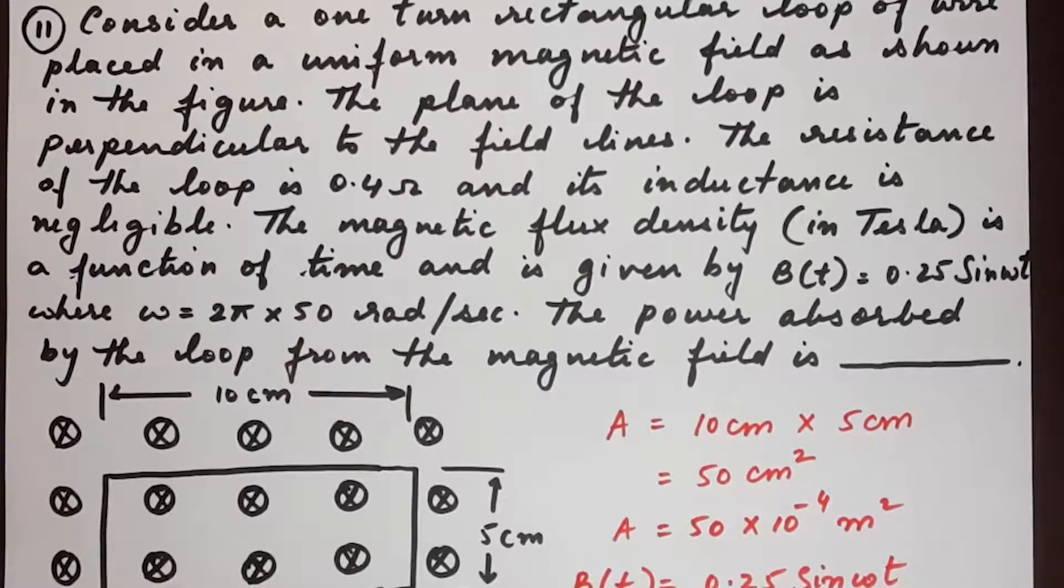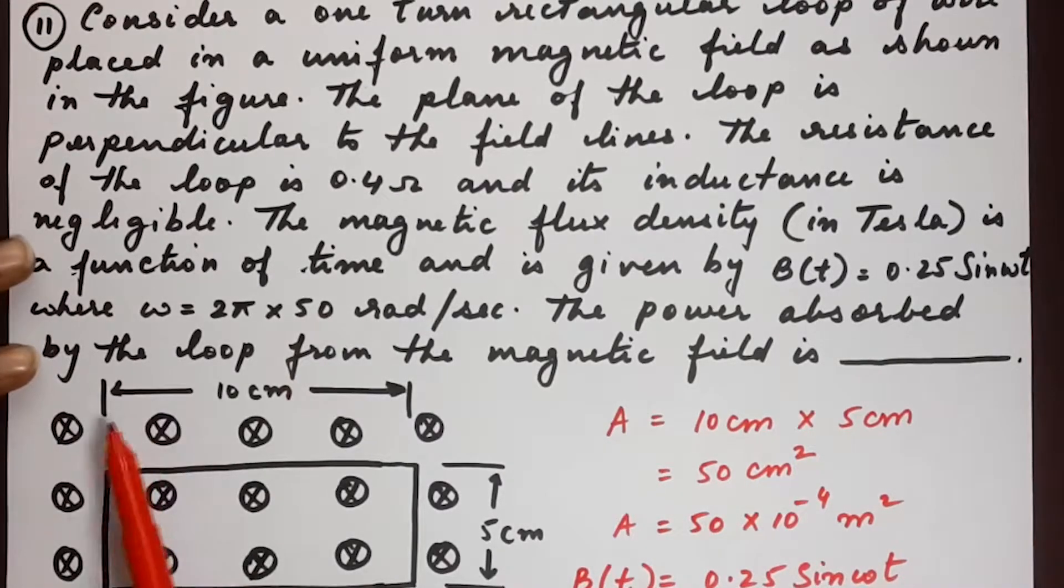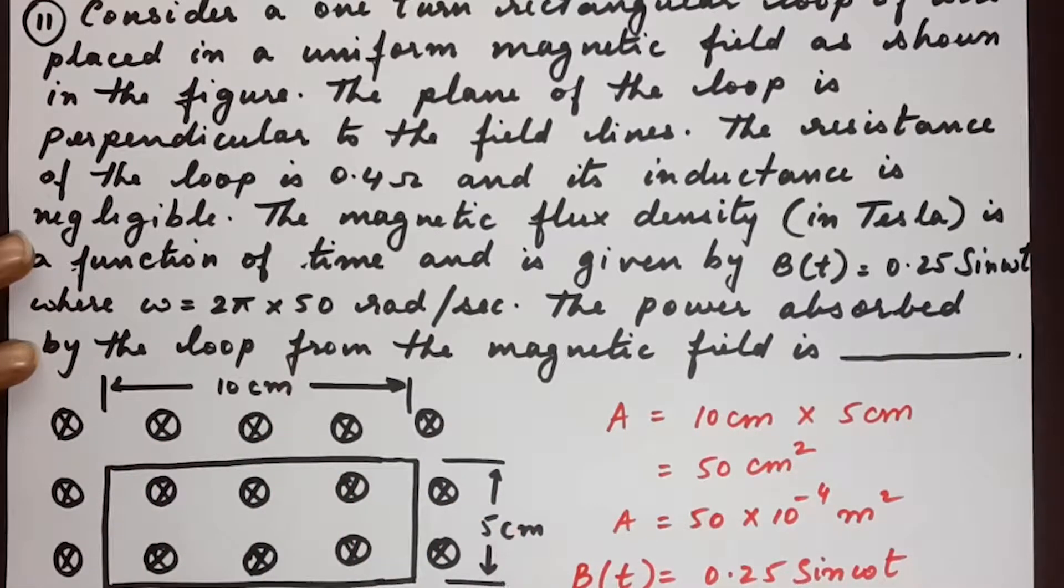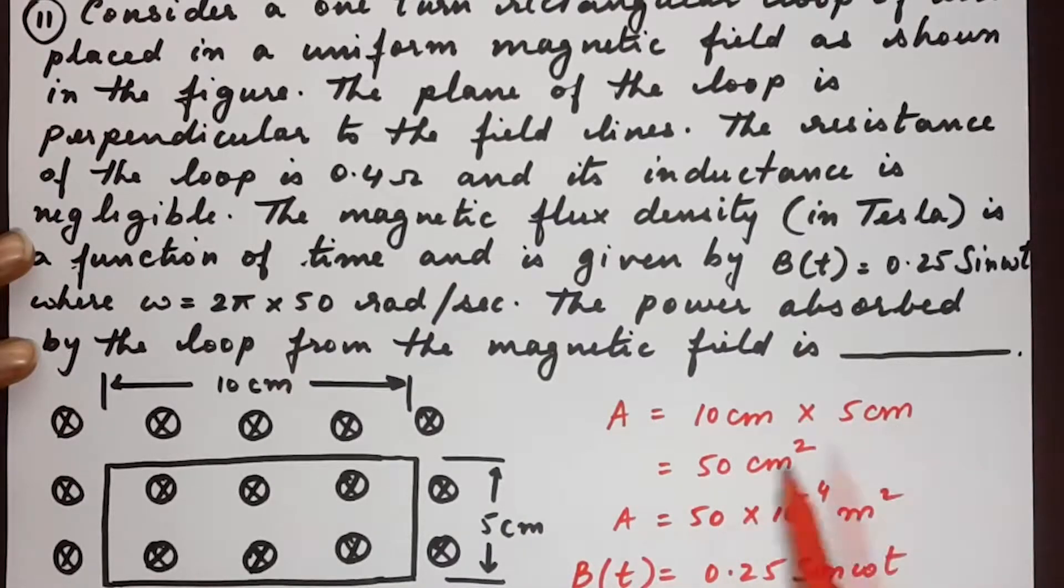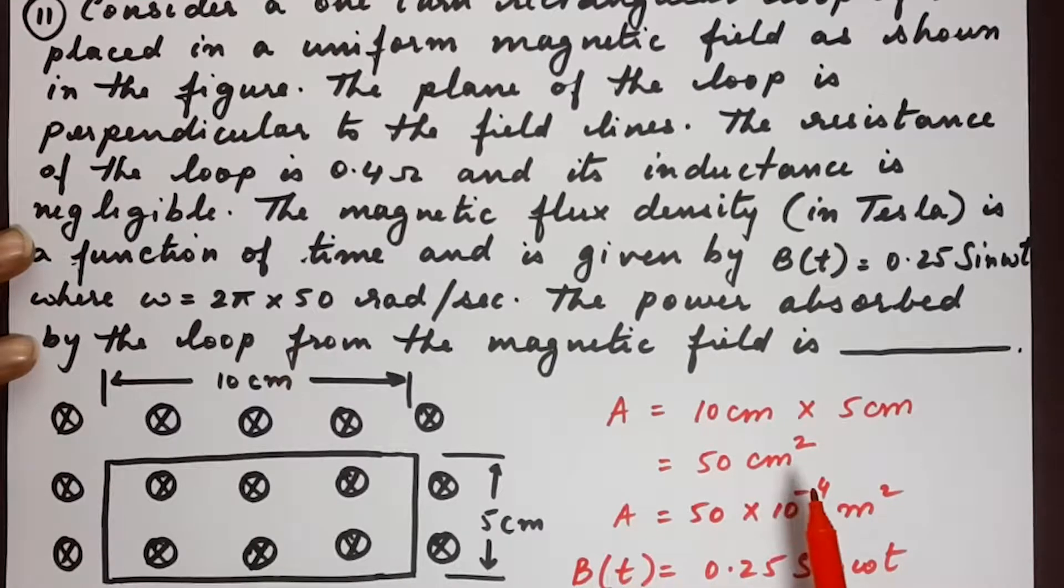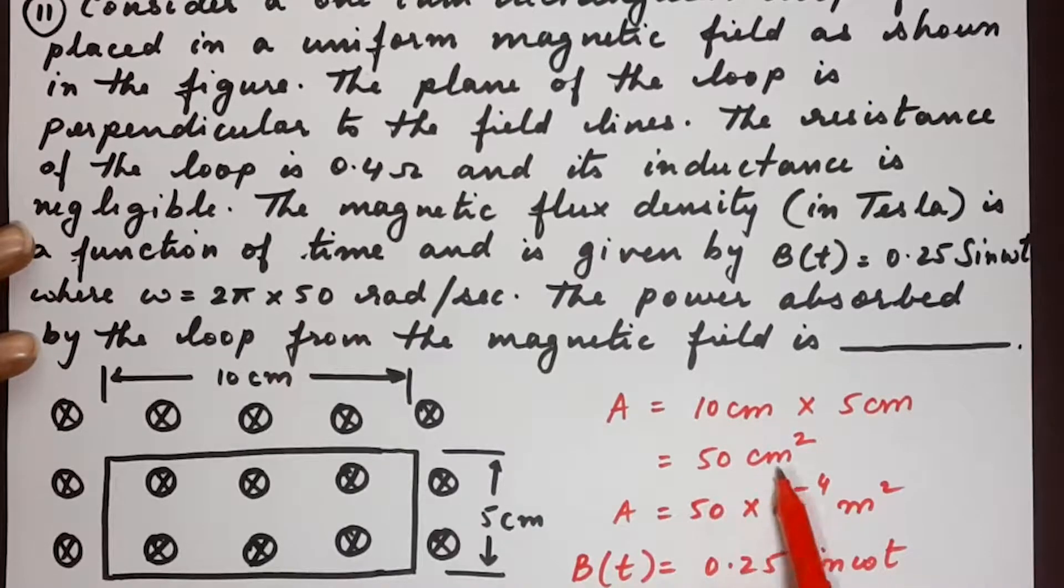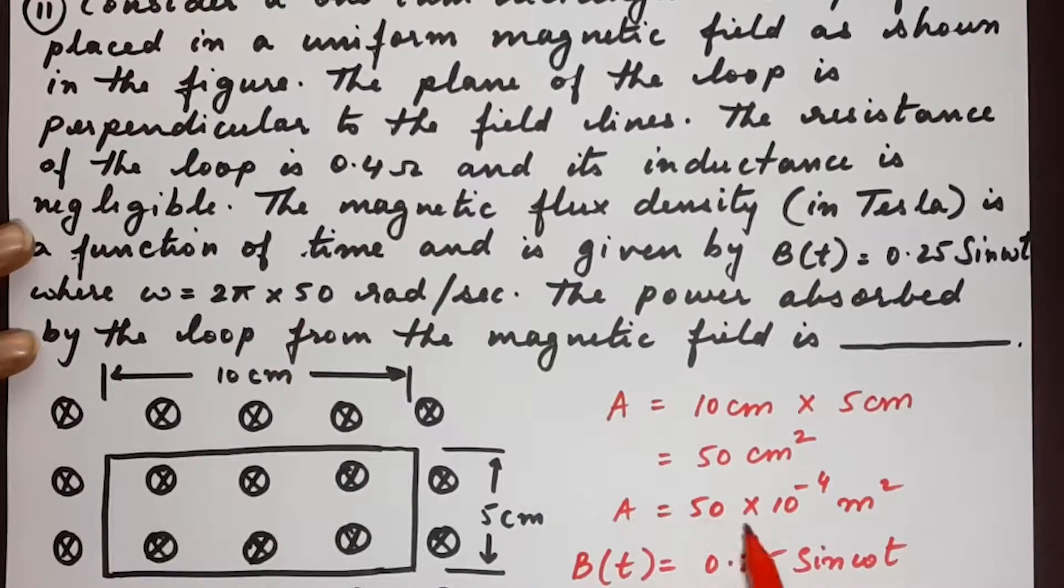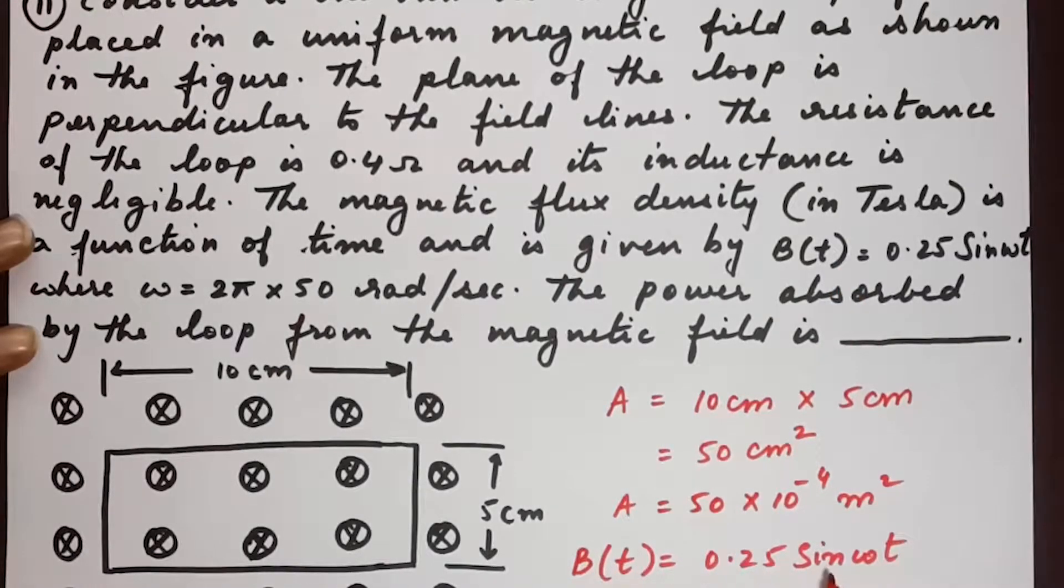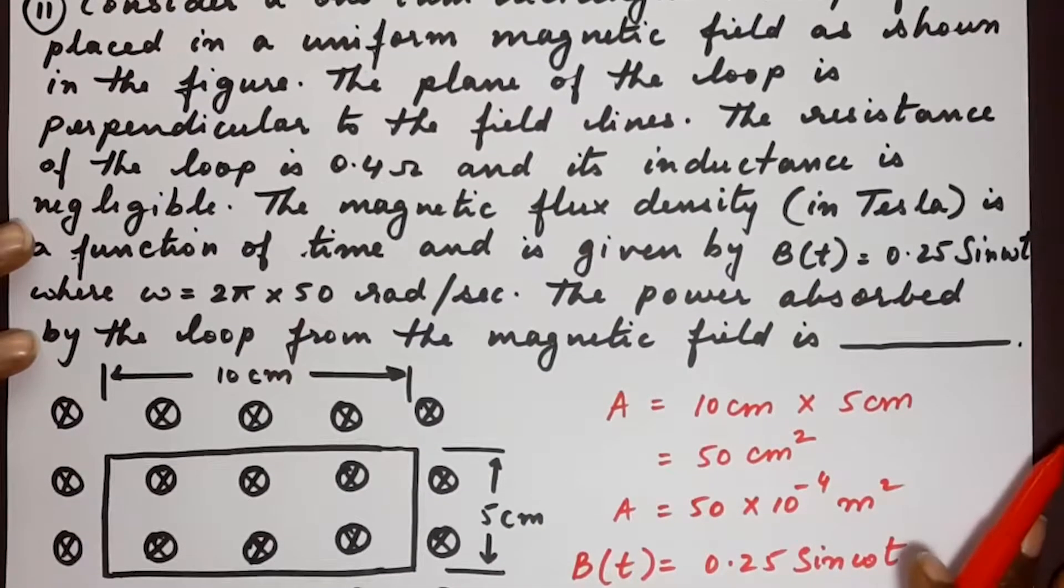So first we begin by writing down what's given to us. We have here the area of the rectangular loop, the measurements given are 10 centimeters by 5 centimeters, so that's 50 centimeters square. Now it is important to note the units, so we convert this 50 centimeter square and we write it as 50 into 10 power minus 4 meter square. And we have been given the flux density, the magnetic flux density and resistance. So this is all that's been given to us.